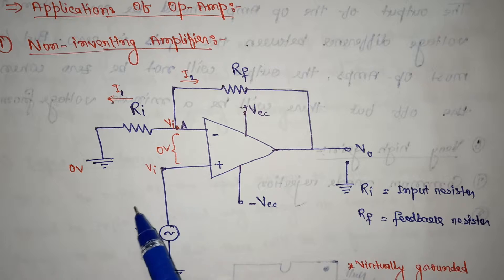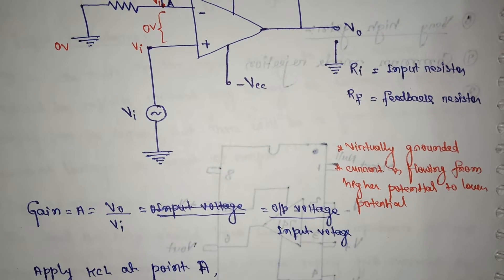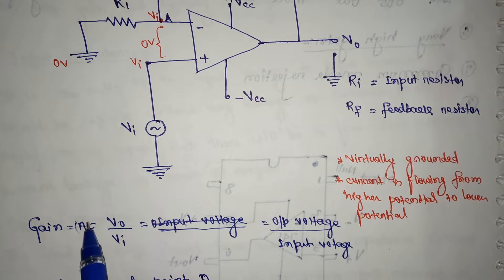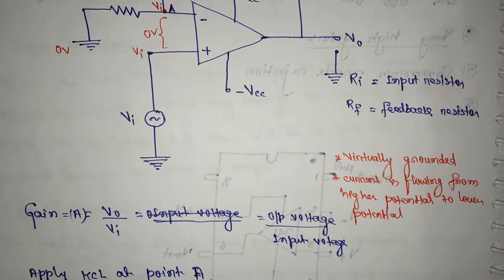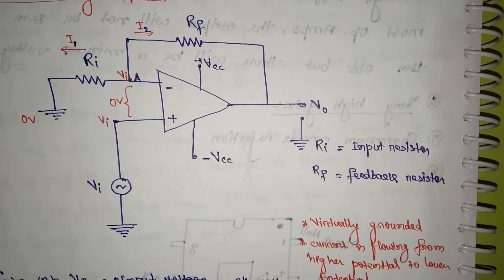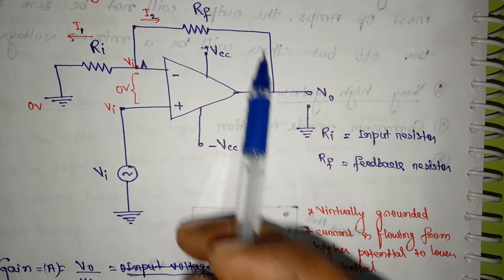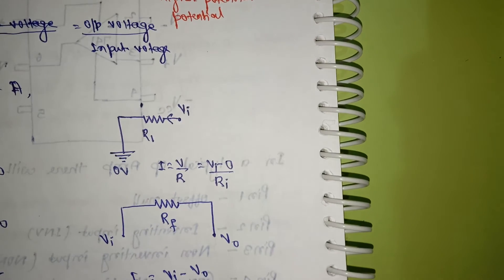We label a node as point A. The gain is denoted by A and is equal to V-naught divided by VI, that is output voltage divided by input voltage. From the diagram, we take two parts — from one node to another — and we will apply the KCL rule at point A.